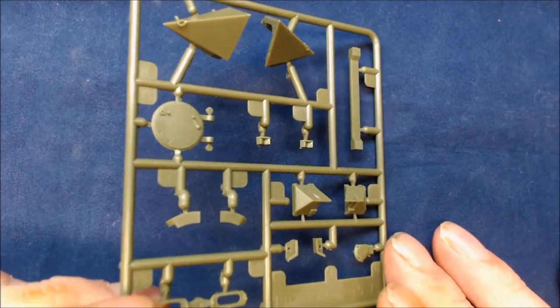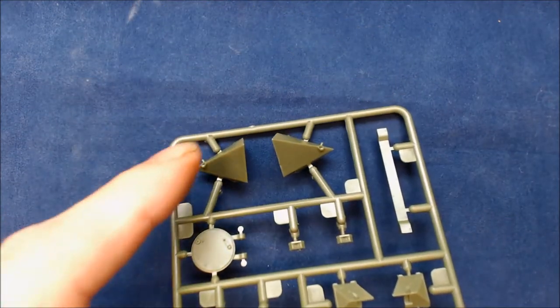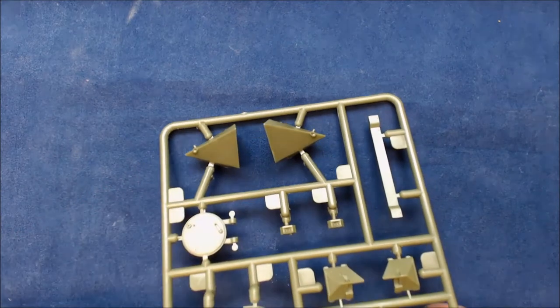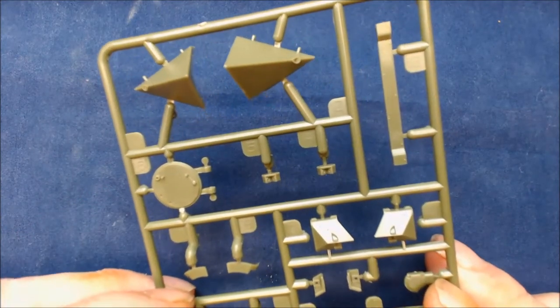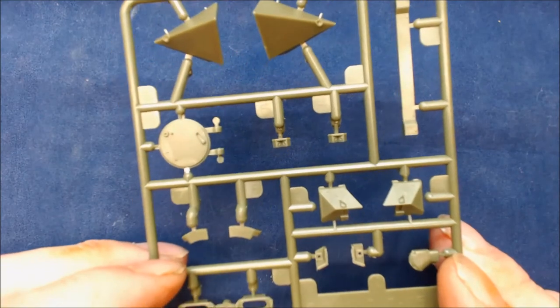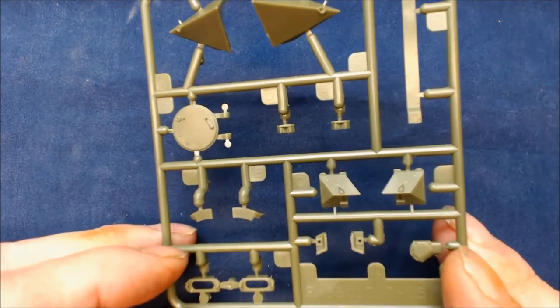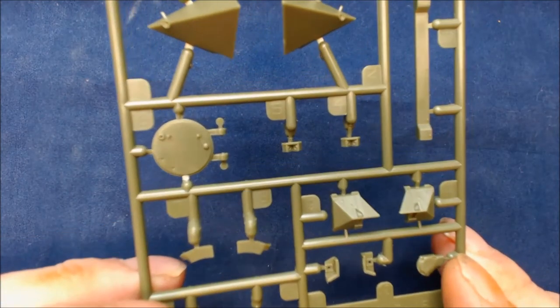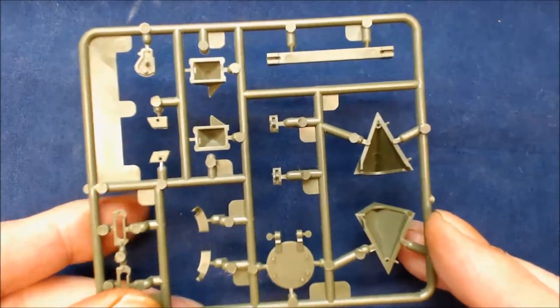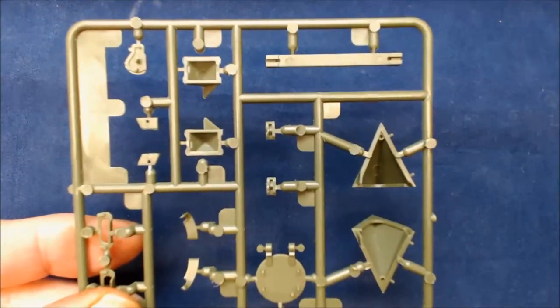Right, on to the next one. This is sprue F, just a small sprue. It's them funny bits that stick out the front of the vehicle, a few hatches and bits and pieces. All look nice and clean, no problems there.